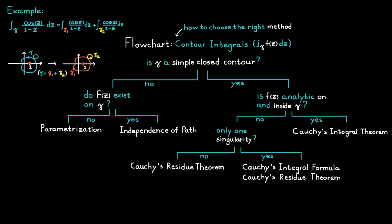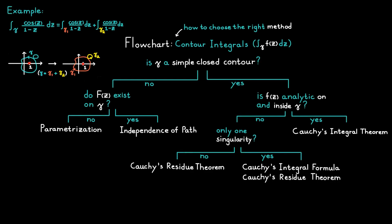Now we can simply use the flowchart for each integral one at a time. For the first integral, contour gamma 1 is a simple closed contour but the function is not analytic inside and on the contour since we have a singularity at z equal to one. Since we only have one singularity, we can choose to use either Cauchy's integral formula or Cauchy's residue theorem.